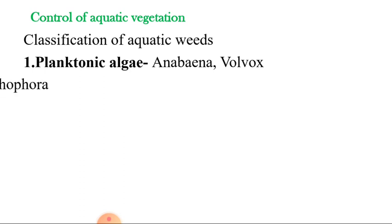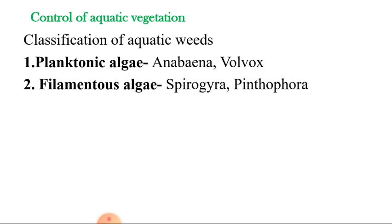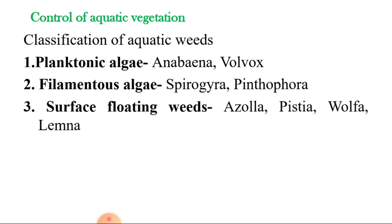The second type is filamentous algae. This algae forms algal mats in and around the pond water. Examples of filamentous algae include Spirogyra and Pithophora.